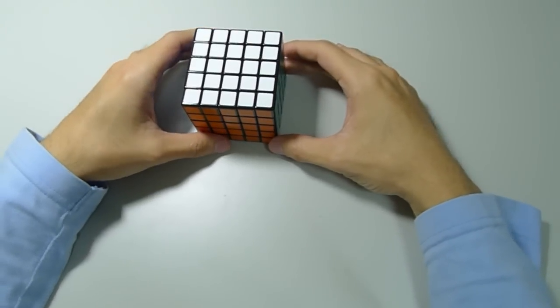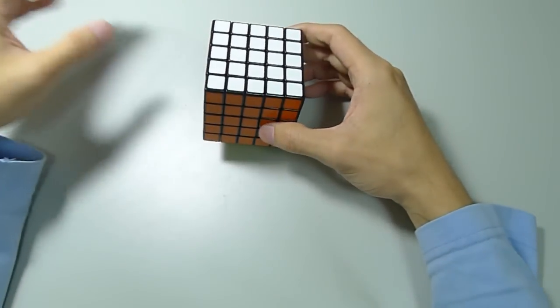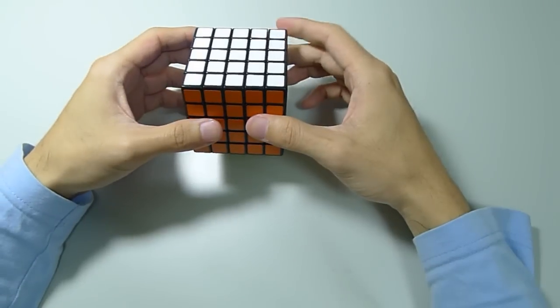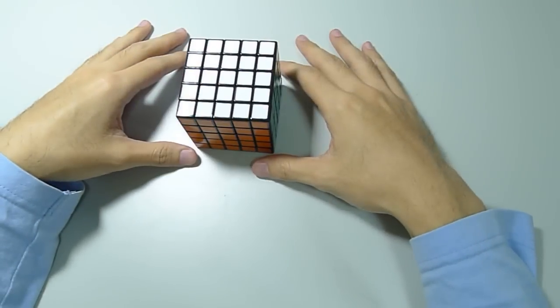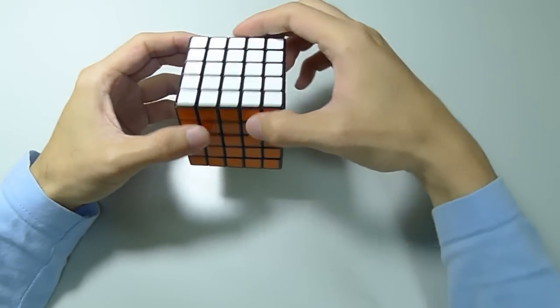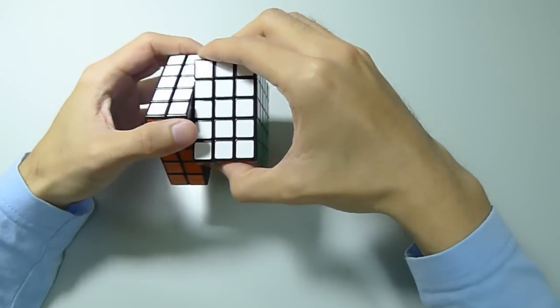Before going to the mechanism, I have to explain why there's such an alignment system in the 4x4 cube. Just imagine that you have a 5 layer cube, but you cannot touch the inner layer. What will happen?